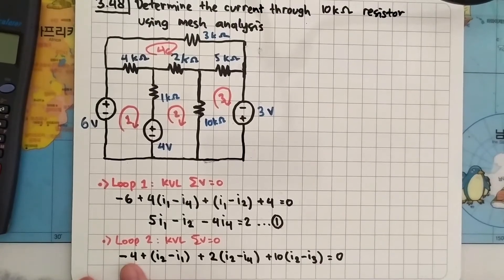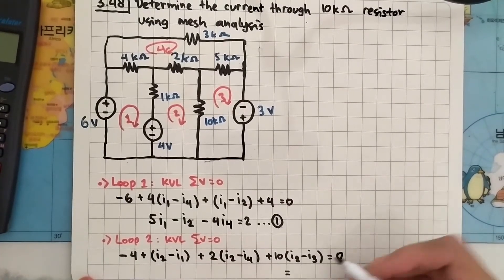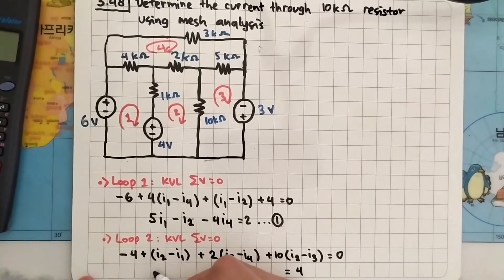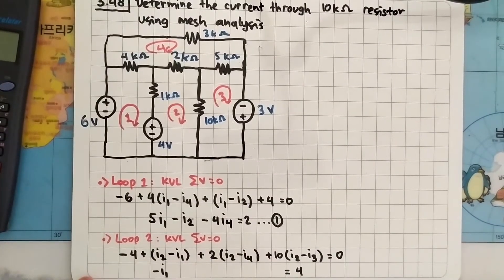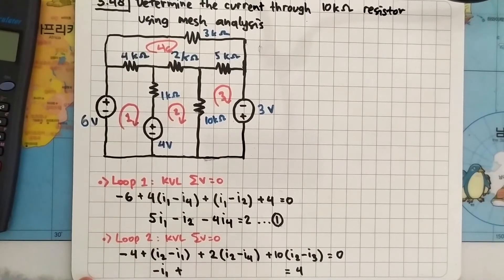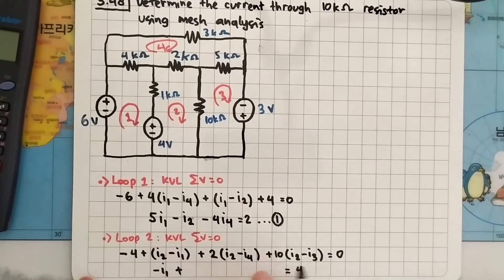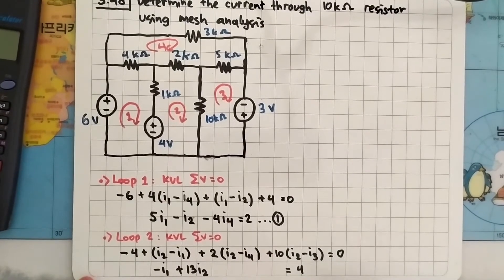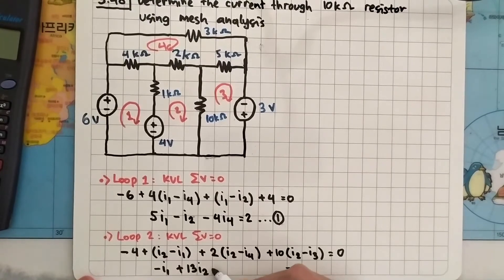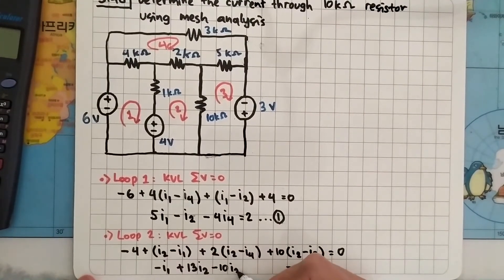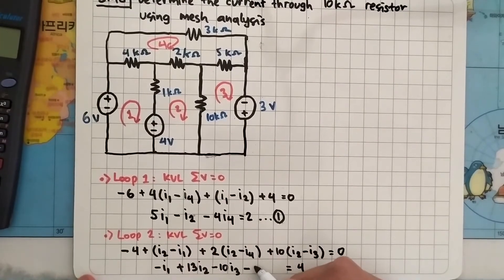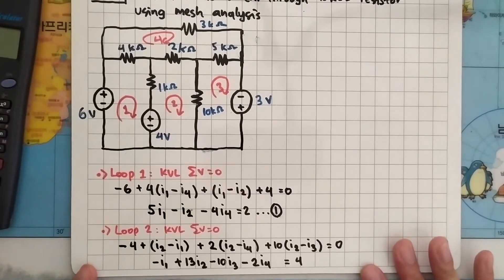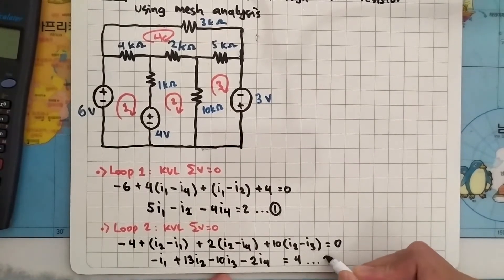Moving the minus 4 to the right-hand side, we have 4 on the right. For i1 we have only minus i1. For i2 we have 1 plus 2 plus 10, which is 13·i2. For i3 we have minus 10·i3. For i4 we have minus 2·i4. Let's save this as equation number 2.